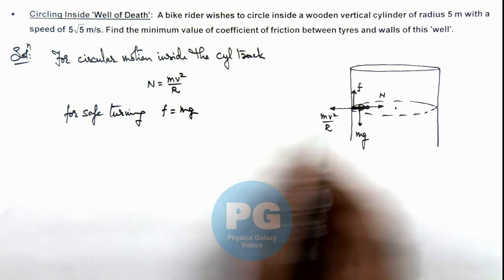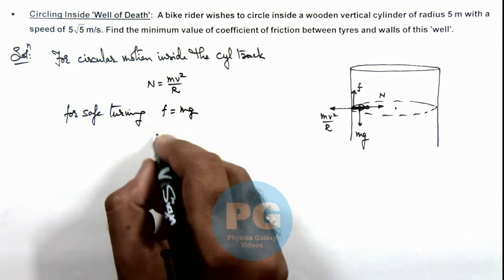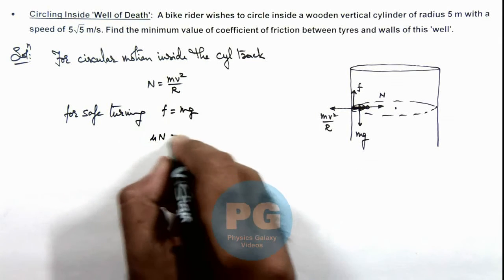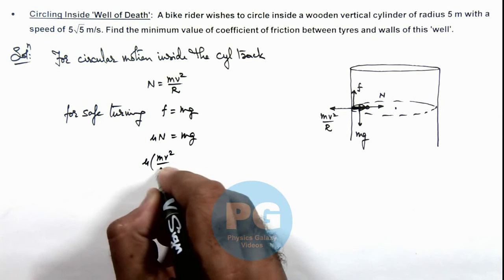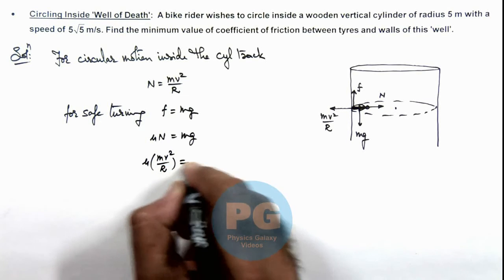And the value of friction at its limiting value would be mu n, and the value of n we can substitute as m v square by r.